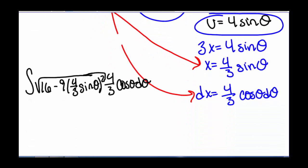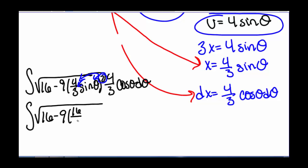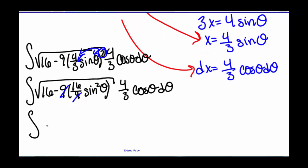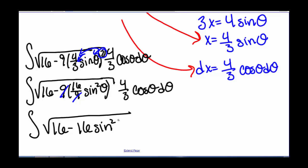So now we need to simplify. Bringing this squared term in and squaring everything inside, we have the integral of the square root of 16 minus 9 times 16 over 9 sine squared of theta, times 4 thirds cosine of theta d theta. Our 9's cancel, so we're left with the integral of the square root of 16 minus 16 sine squared theta, times 4 thirds cosine of theta d theta.